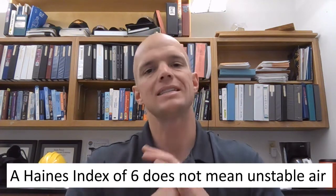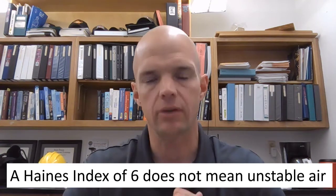Frankly, you can have a Haynes index of 6, and the atmosphere at those layers is still stable, still inherently stable. So why do we talk about the Haynes index and stability in the same breath? We shouldn't. So stop doing it. Have you ever heard somebody on the fire line say, Hey, we've got a Haynes of 6 today, so the atmosphere is very unstable. That is not true. That is not true at all. The surface layer could be unstable, but the layers that the Haynes index is seeing are not going to be unstable. We have to decouple this idea of atmospheric stability with what the Haynes index is showing.